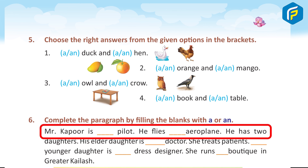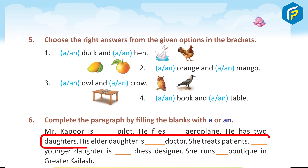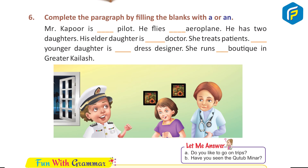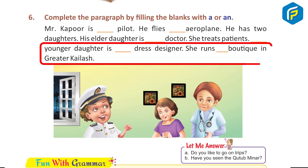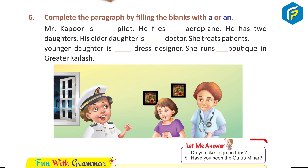Mr. Kapoor is a pilot. He flies an aeroplane. He has two daughters. His elder daughter is a doctor. She treats the patients. His younger daughter is a dress designer. She runs a boutique in Greater Kailash.